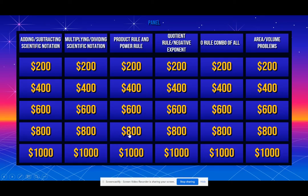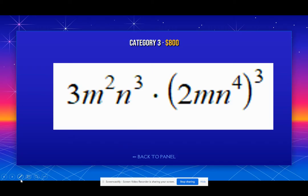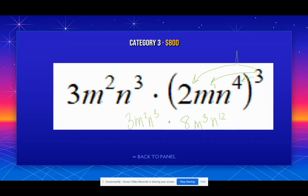Now we move on to our exponents — product rule and power rule. Here, we want to do everything in the parentheses first and then combine it with the outside. In the parentheses: 2 to the 3rd is 8. M to the 1st to the 3rd — there's that imaginary 1 — is M to the 3rd. N to the 4th to the 3rd is N to the 12th. Now I want to multiply it with 3M squared N to the 3rd. Combine 3 and 8 — multiply to get 24. Add the like terms: M to the 3rd and M squared gives M to the 5th; N to the 12th and N to the 3rd give N to the 15th.